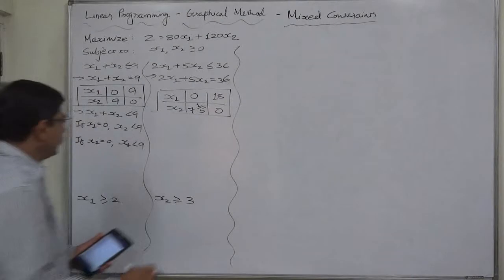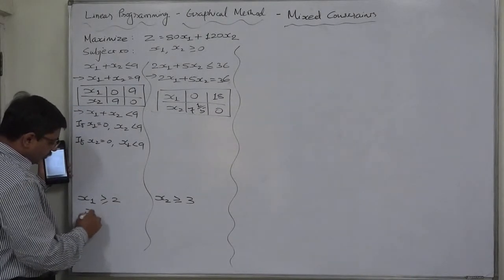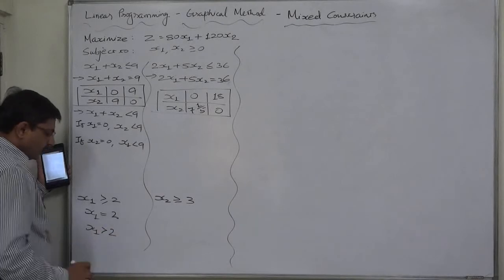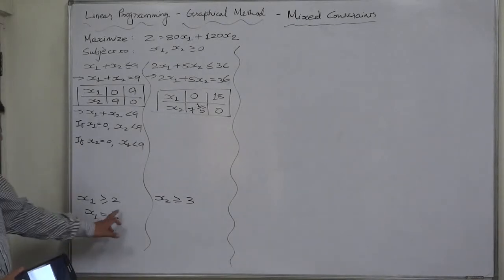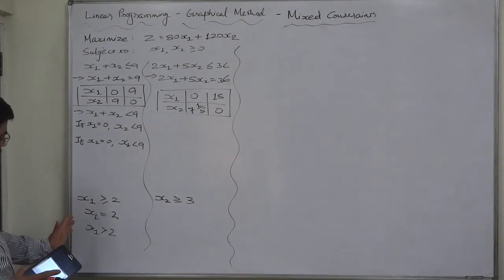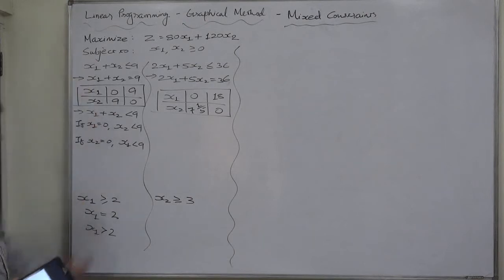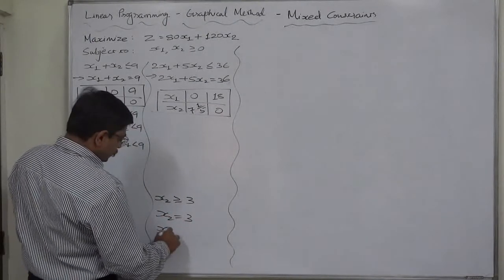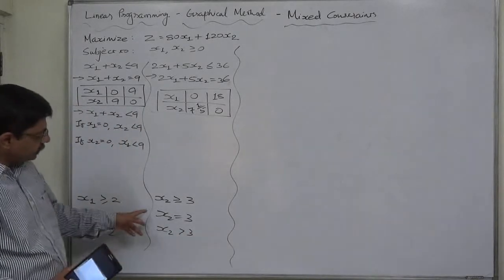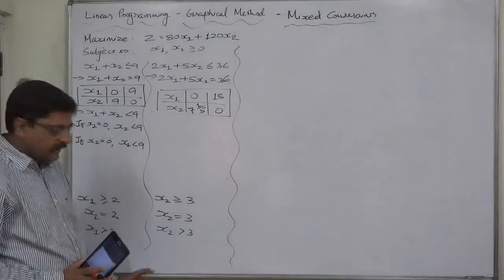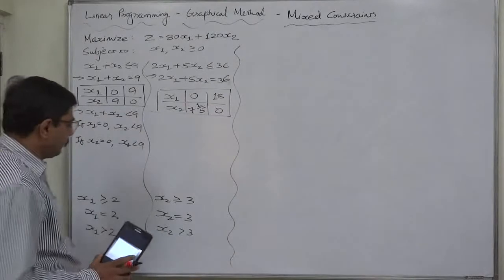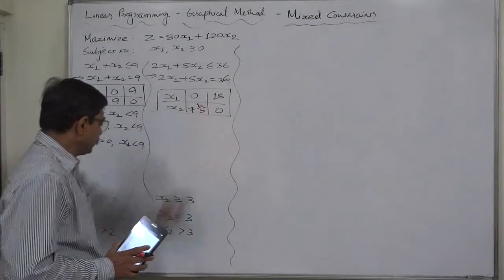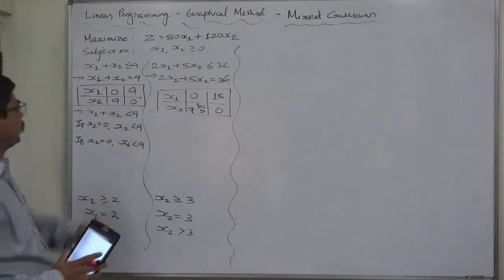x1 greater than or equal to 2, that means equality part x1 equals to 2, and inequality part x1 greater than 2. For any value of x2, x1 will remain either 2 or greater than 2, that means the line will pass through x1 equals to 2 parallel to x2 axis. x2 greater than or equal to 3, equality will be x2 equals to 3, inequality will be x2 greater than 3. That means for any value of x1, x2 will be either 3 or greater than 3. That means the line will pass through x2 equals to 3 parallel to x1 axis. On x1 we need the highest value of 18 units and on x2 we need highest value of 9.